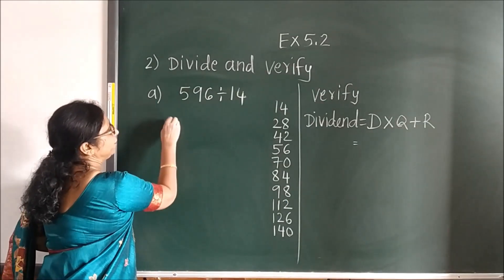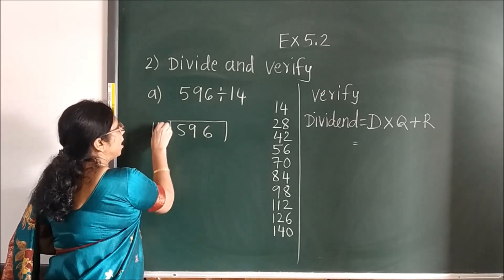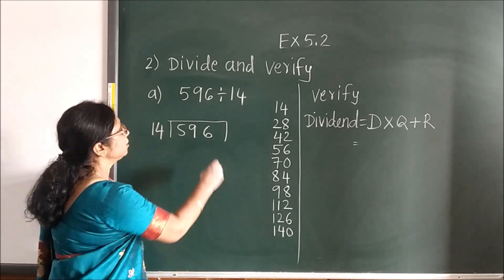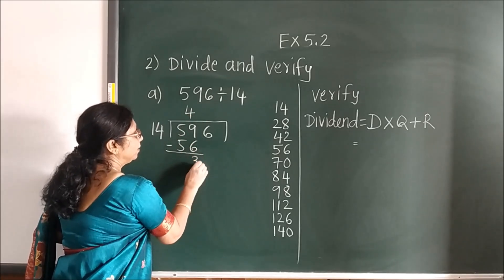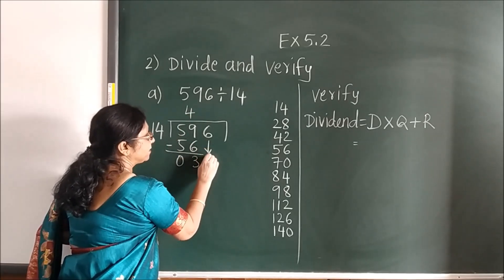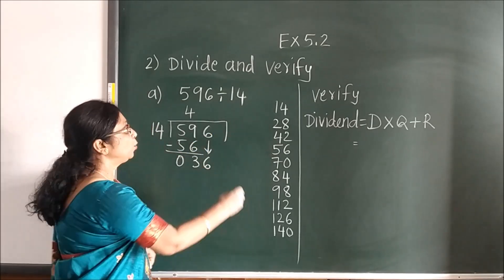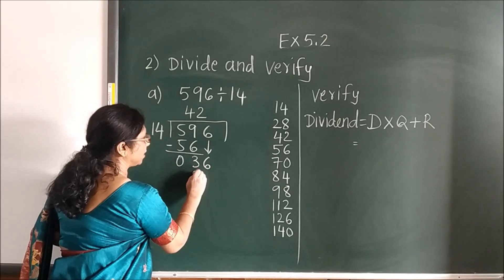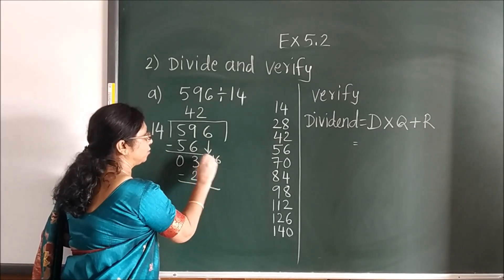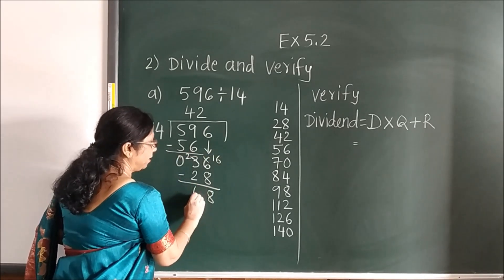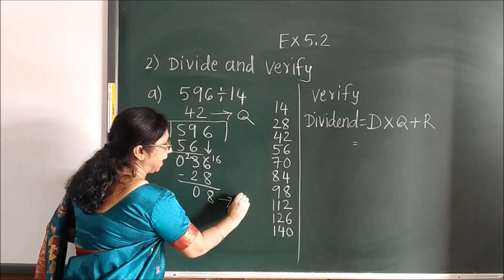So first we divide children and then we will verify. I have used the table of 14: 14 fours are 56. Subtract, bring the next number down — 46. Less than 46 is 28, so 14 twos are 28. Subtract — this is your quotient and 8 as the remainder.